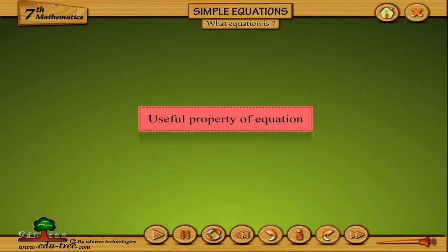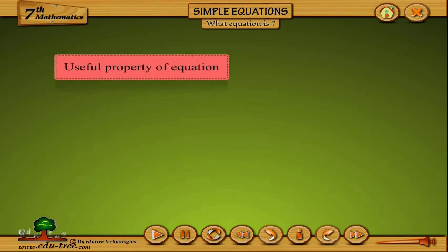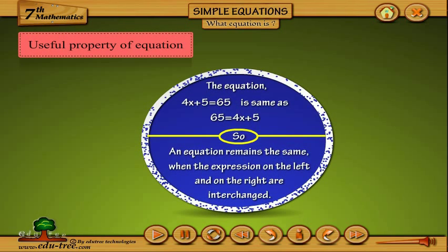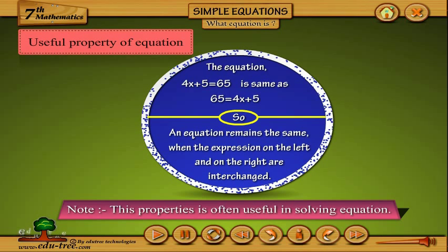Useful property of equation. The equation 4x plus 5 equals 65 is same as 65 equals 4x plus 5. So an equation remains the same when the expression on the left and on the right are interchanged. Note, this property is often useful in solving equations.